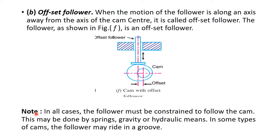Note, some important note. In all cases, the follower must be constrained to follow the cam. It means that follower motion depends on the cam profile. That is the cam profile, it depends on the cam profile. It means that motion of follower depends on the cam profile. This may be done by the spring, gravity, or hydraulic means. It means that some spring will be attached with follower here and restrict the motion.